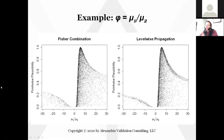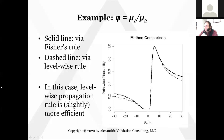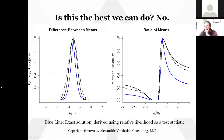Let's do another example — the Fieller-Creasy problem, where you want to know the ratio between two normal means. This is notorious in the statistics community for giving weird results. Here's what the sample haze for that problem looks like. This is actually one of those weird cases where level-wise propagation gets you a more efficient answer. But is this really the best we can do? Just taking the sample haze and drawing a line on top of it — is that the most efficient structure we can get? Emphatically no.